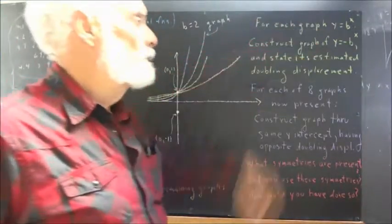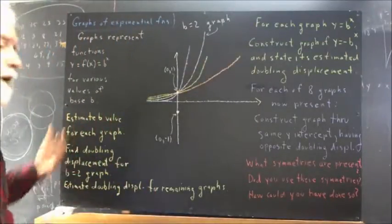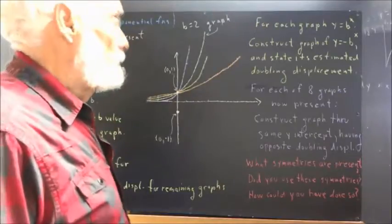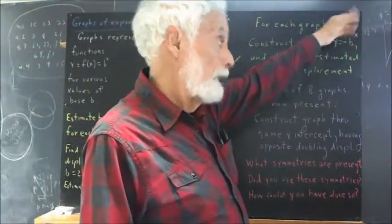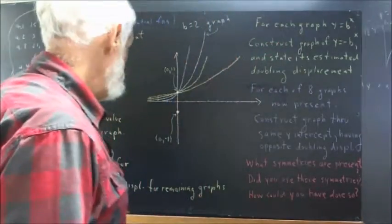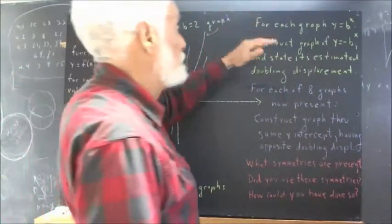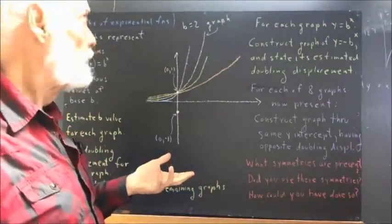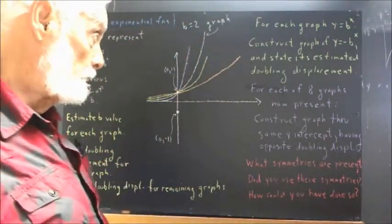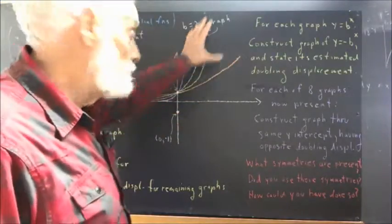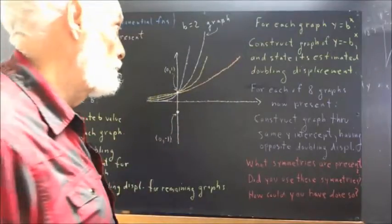Then, for each graph, I want you to construct a new graph. For each of these four graphs—and each graph has a form y equals b to the x, the value of b is different for each graph. For each of these graphs, you have some value of b, and you don't have to know what that value of b is. Just based on the graphs as you see them, with no scale or nothing.